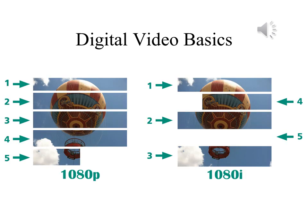This slide shows you the practical difference between the two. Let's say a picture of this balloon uses 5 rows of pixels. In a progressive scan, it will scan rows 1, 2, 3, 4, and 5 in that order.